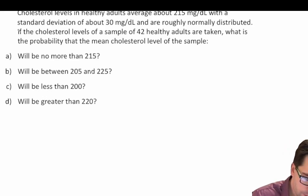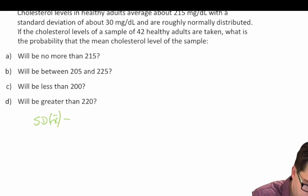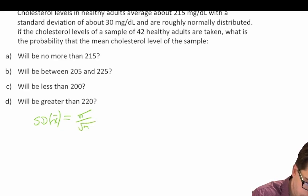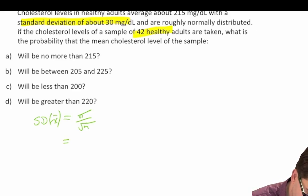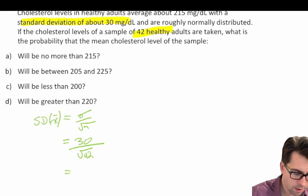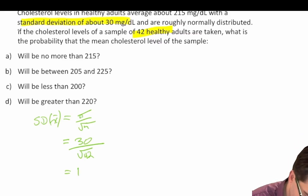Let's start by calculating the standard deviation of the mean of our sample, which is equal to sigma divided by root n. We're told that the standard deviation of healthy adults is 30 milligrams per deciliter and we have a sample size of 42. So we take 30 divided by the square root of 42, which equals 4.6291.